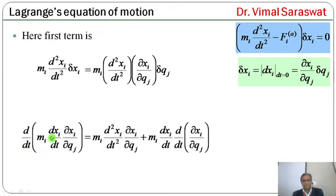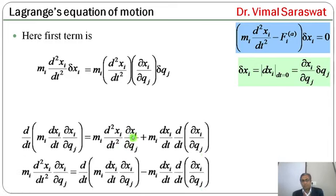d/dt(mi * dxi/dt * ∂xi/∂qj) = mi * d²xi/dt² * ∂xi/∂qj + mi * dxi/dt * d/dt(∂xi/∂qj). Therefore: mi * d²xi/dt² * ∂xi/∂qj = d/dt(mi * dxi/dt * ∂xi/∂qj) - mi * dxi/dt * d/dt(∂xi/∂qj).